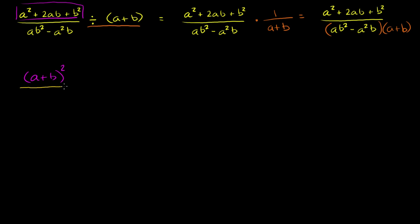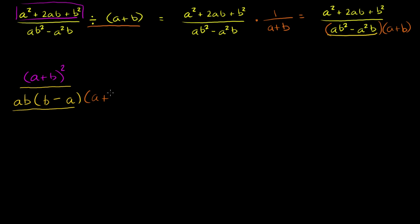Now the denominator: let's factor out an ab. ab squared divided by ab — a cancels out, you're left with b, so ab times b is ab squared. Then minus a squared b divided by ab is just a. So ab squared minus a squared b factors as ab times b minus a. And of course you also have your a plus b sitting there.